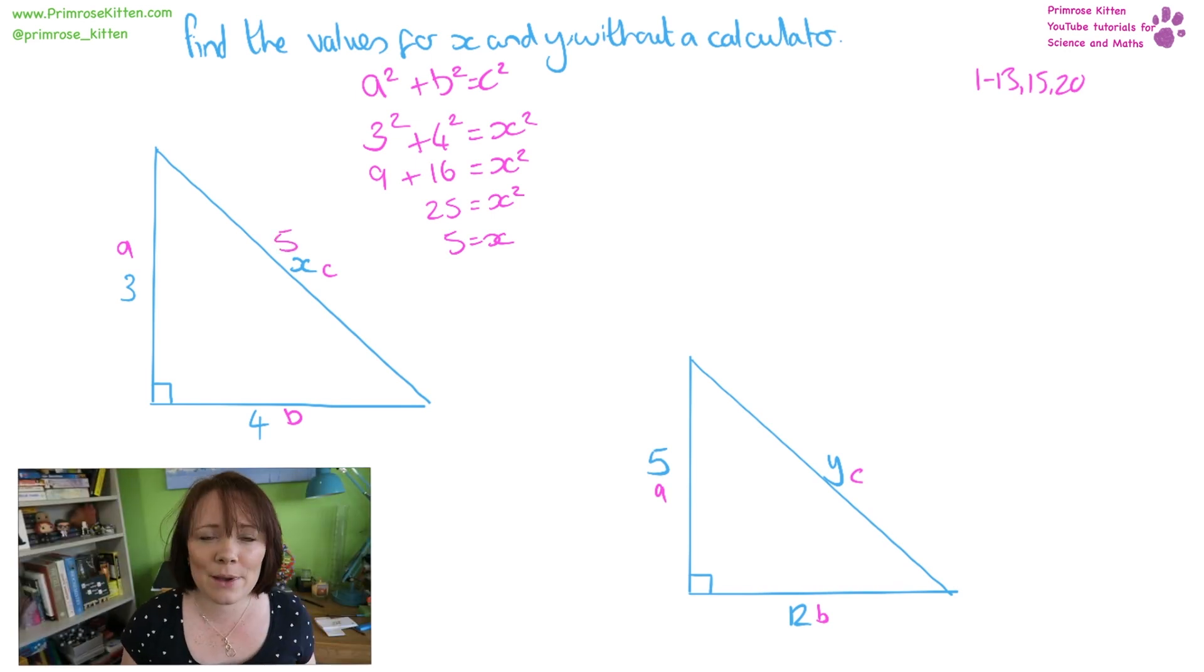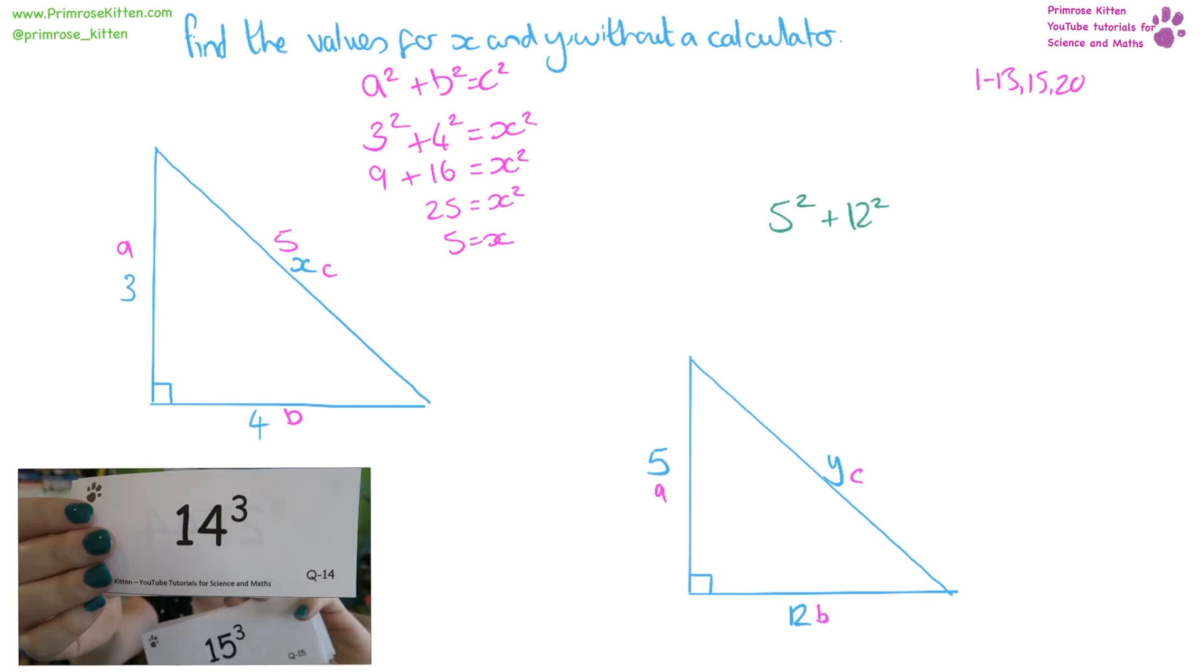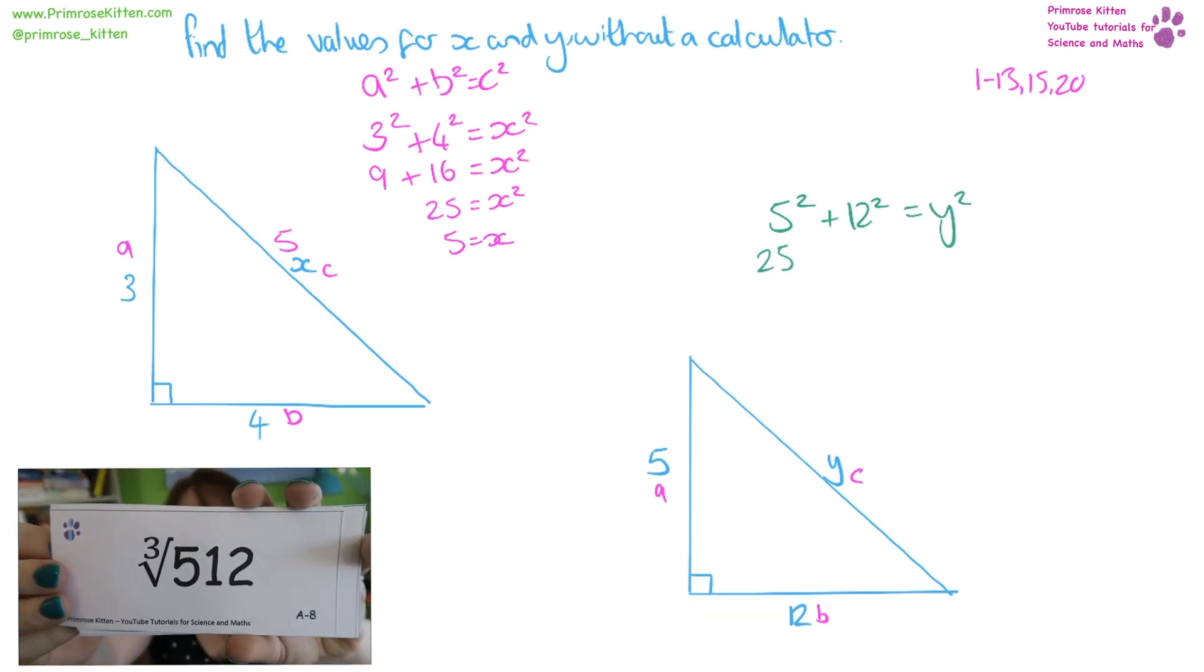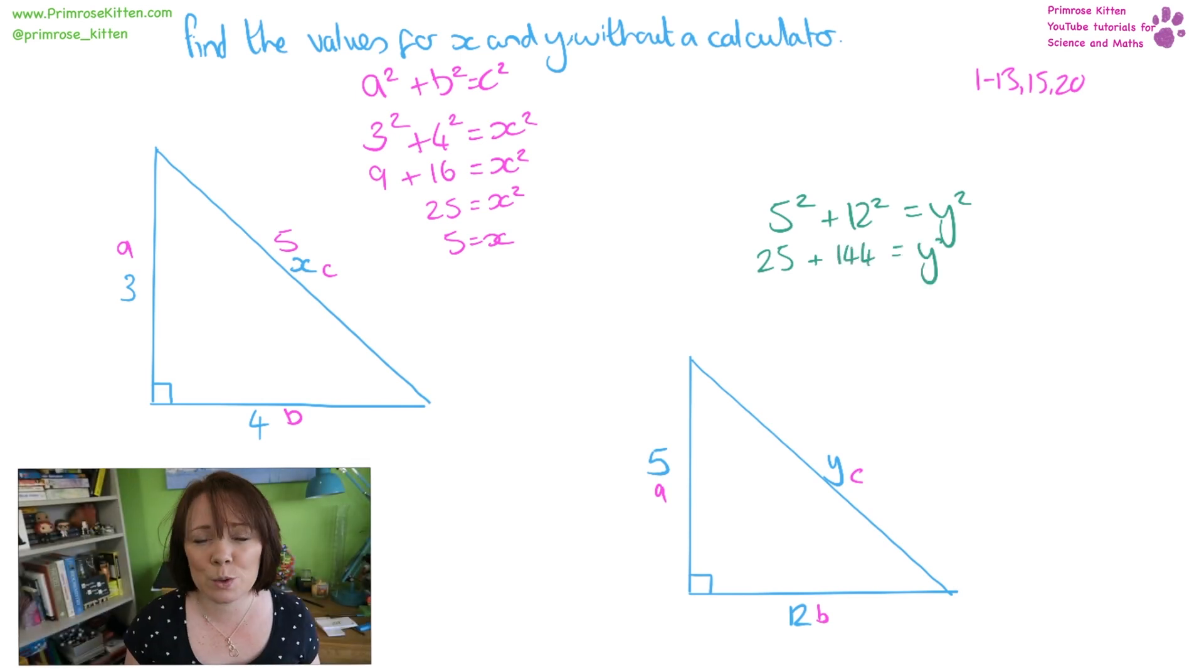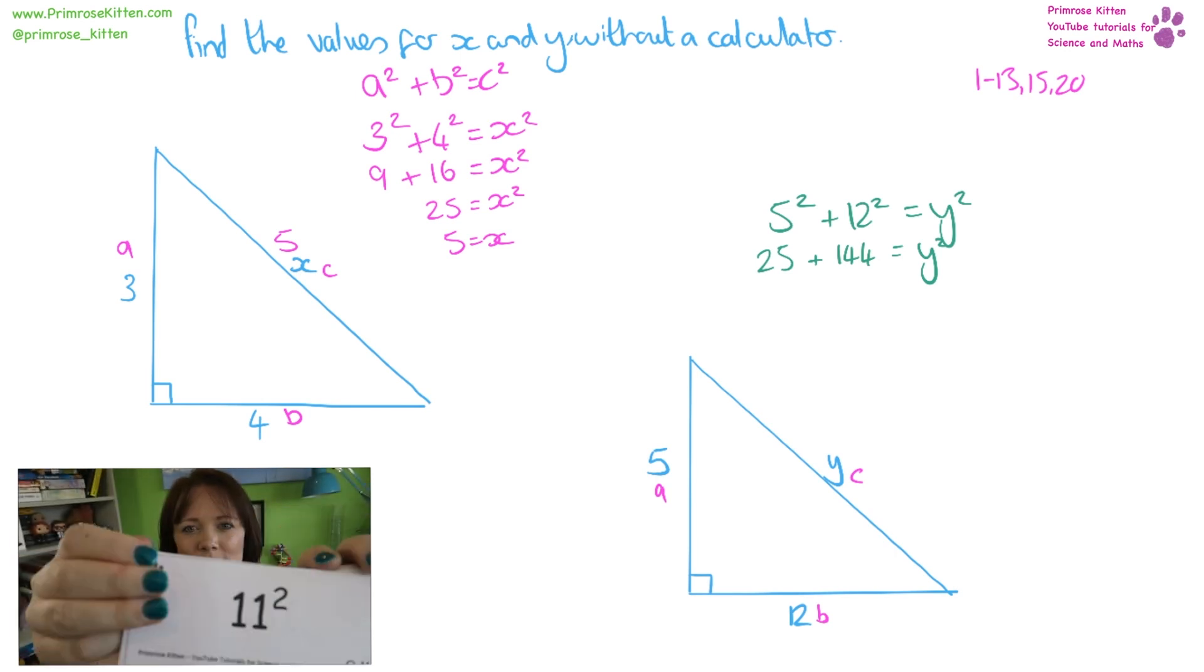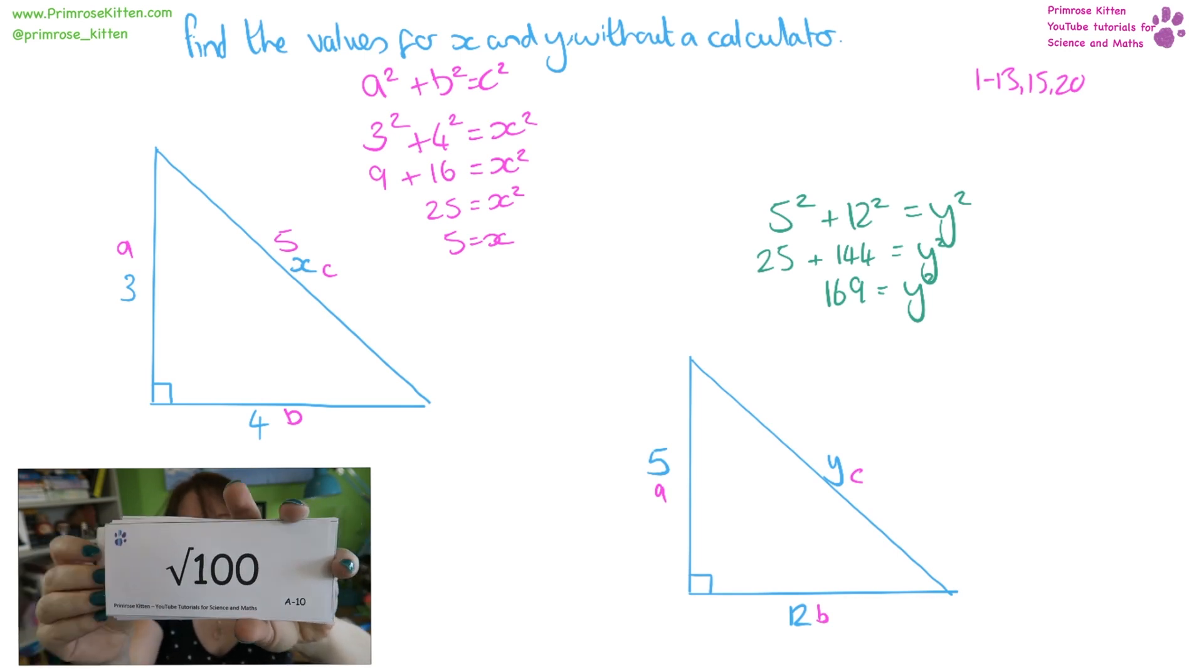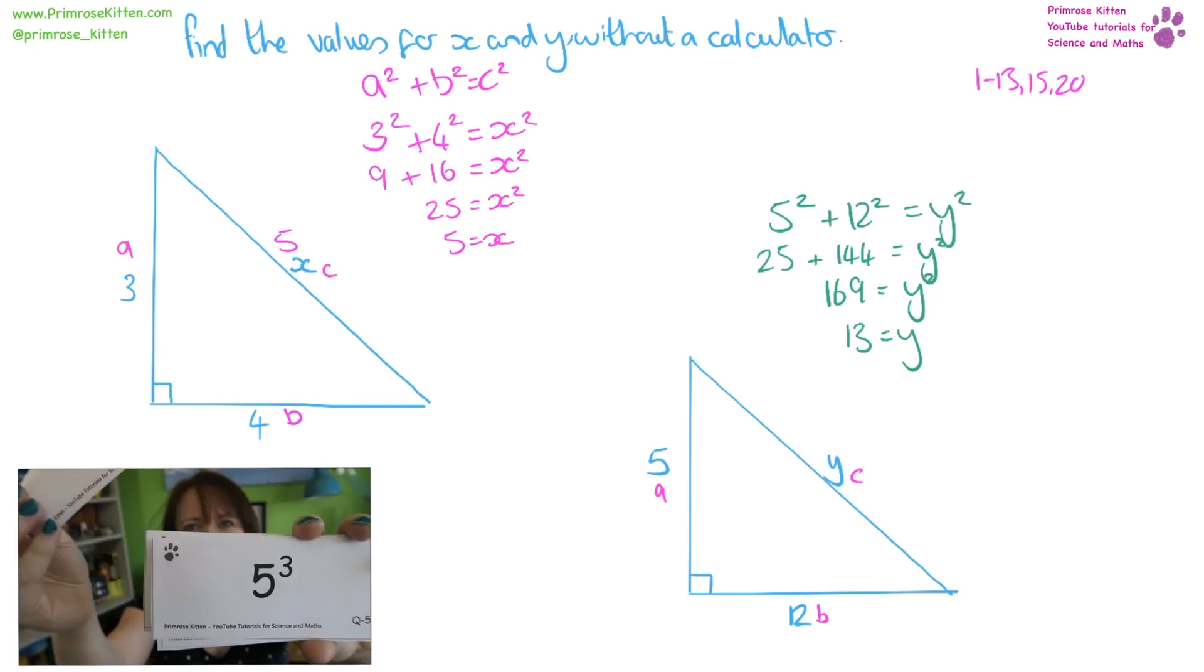Moving on to the second one. We have 5 squared plus 12 squared equals y squared. So 5 squared is 25, 12 squared is 144, that equals y squared. 25 plus 144 is 169. Square root of 169, the square root of y gives us y equaling 13.